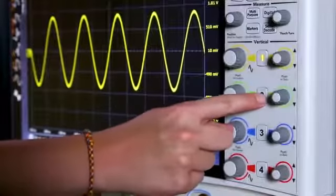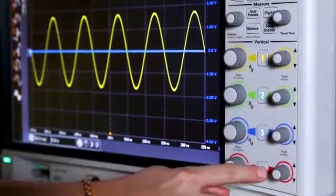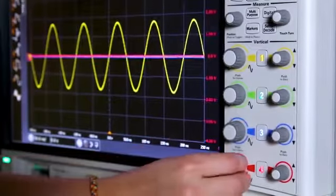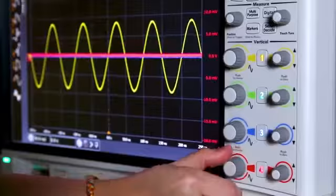If we had signals on all four channels, we can turn on channels 2 through 4 as well. So we'll scale these each separately with their own designated knobs on the front panel.